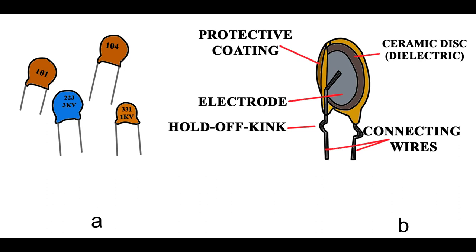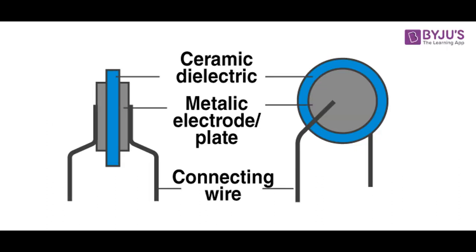The electrodes and dielectric material are encapsulated within a protective casing or housing. The casing is typically made of materials like plastic, ceramic, or metal, providing mechanical support and insulation for the internal components. Lead wires or terminals are attached to the electrodes to provide external connections, allowing the capacitor to be connected to other components in the circuit.